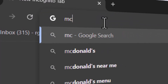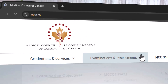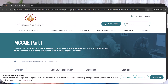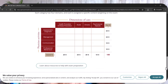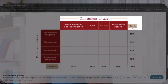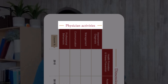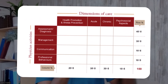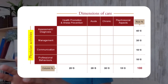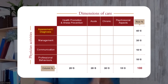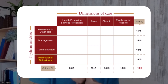First, I want you to understand that the MCQ1 is built on a two-axis blueprint. We have Axis 1 and Axis 2. The first axis is what we call physician activities. The components of physician activities are: assessment and diagnosis, management, communication, and professionalism and ethics.